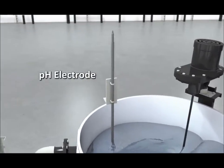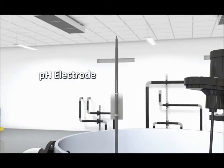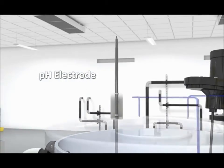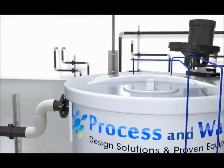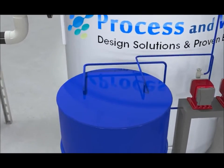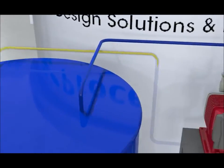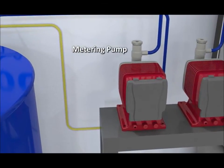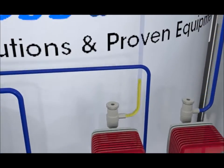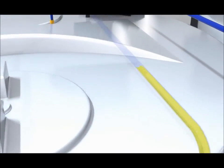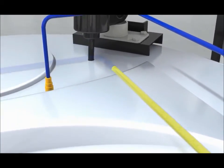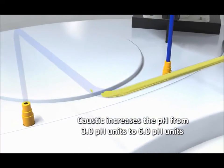The pH electrode senses the pH and displays the results on the control panel. The chemical metering pump dispenses caustic from the first chemical drum, through the metering pump, to the tank to increase the solution's pH from 3.0 pH units to 6.0 pH units.